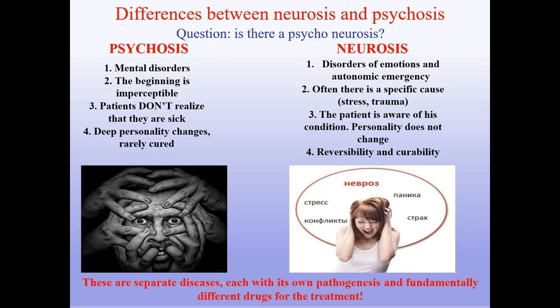Differences between neurosis and psychosis. Psychosis involves mental disorders with an imperceptible beginning; patients don't realize they are sick, there are deep personality changes, and it is rarely cured. Neurosis involves disorders of emotions and autonomic nervous system, often with a specific cause such as stress or trauma. The patient is aware of their condition, personality doesn't change, and it is reversible and curable. These are separate diseases, each with its own pathogenesis and fundamentally different drugs for treatment.